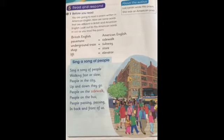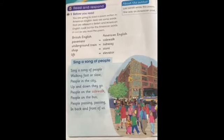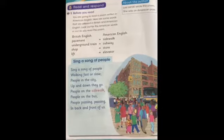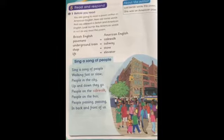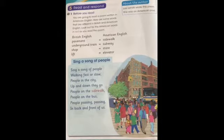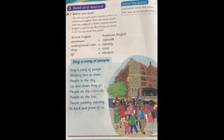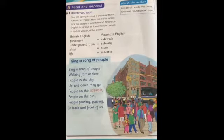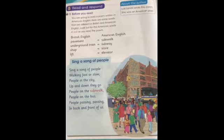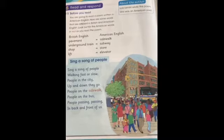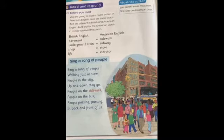Now, my students, before we read — you are going to read a poem written in American English. Here are some words that are different in British and American English. Look out for the American words in red as you read the poem. The writer of the poem is Lois Lenski. She was an American poet.